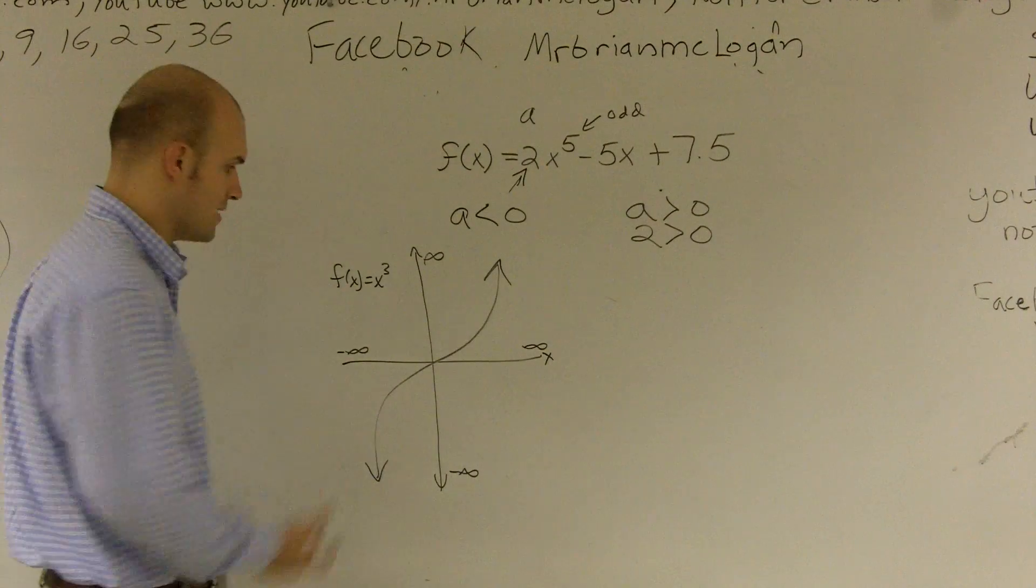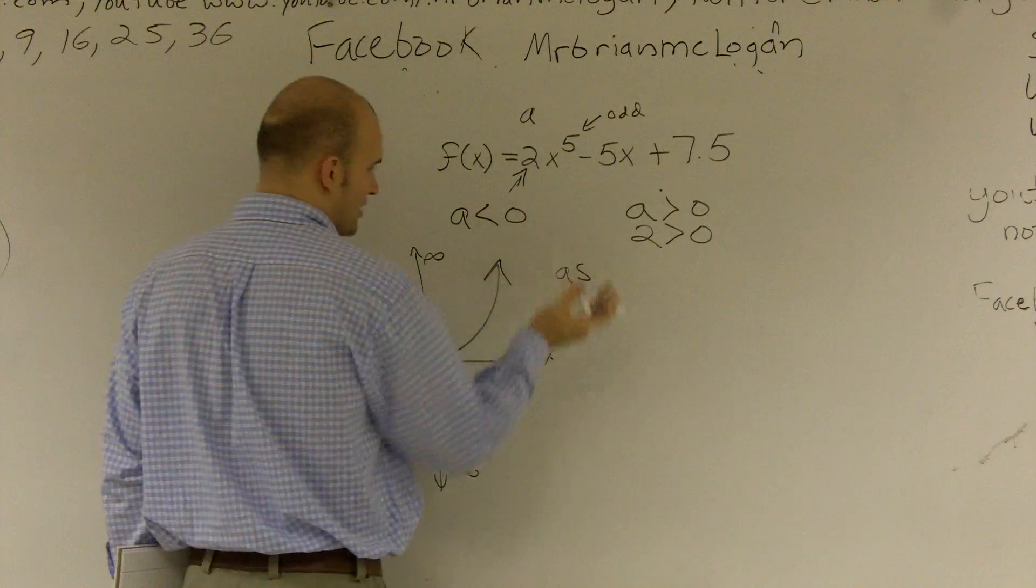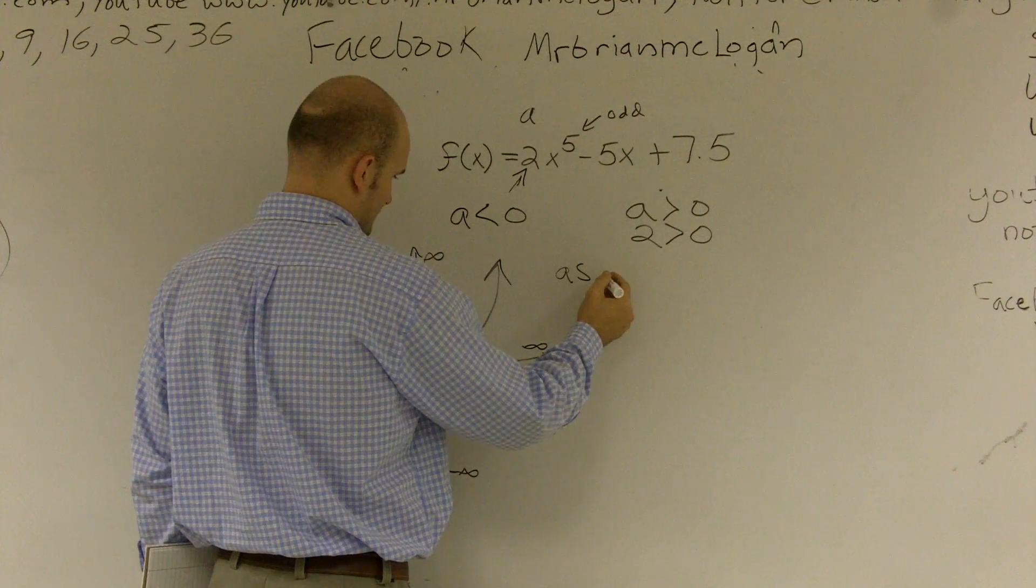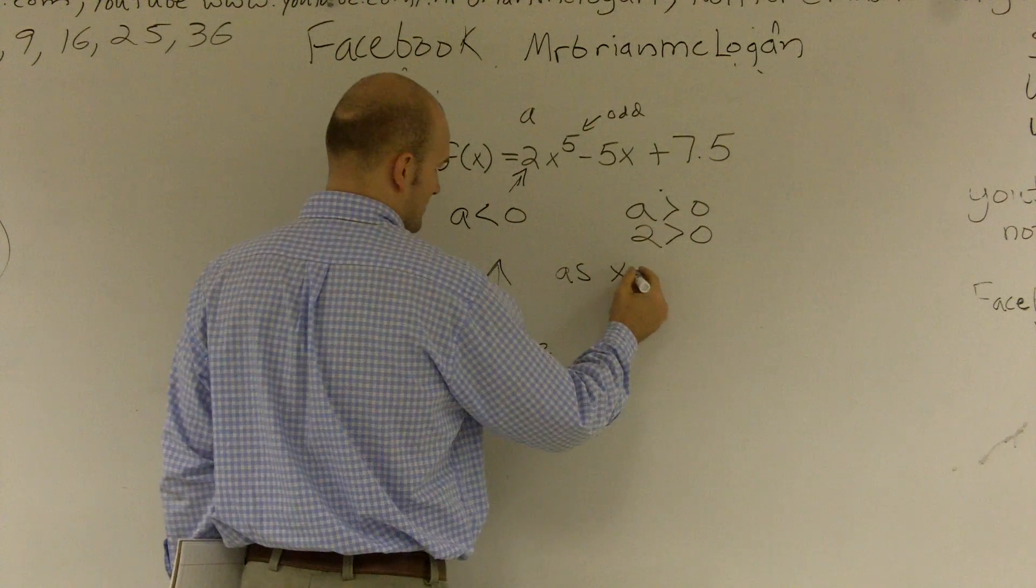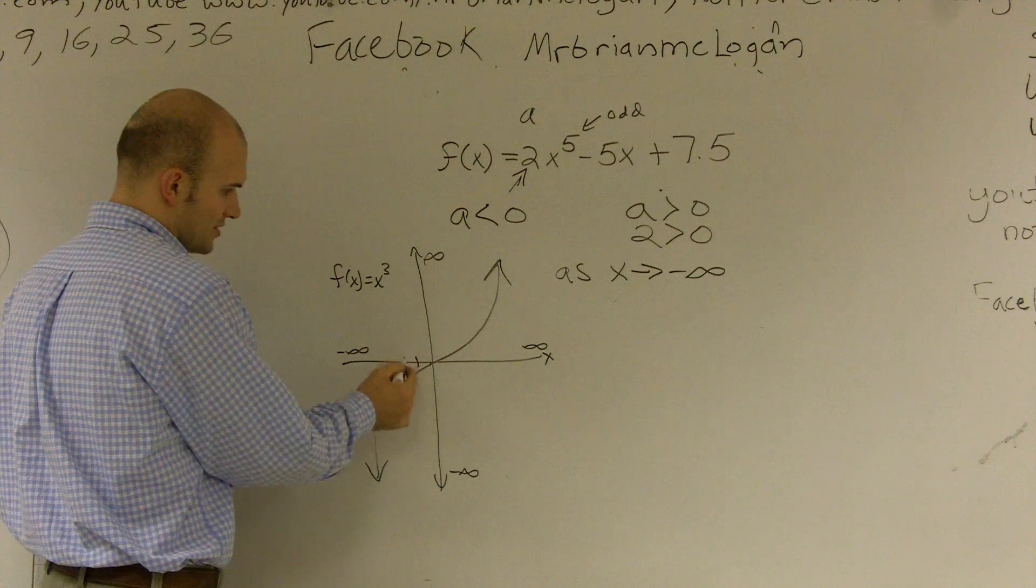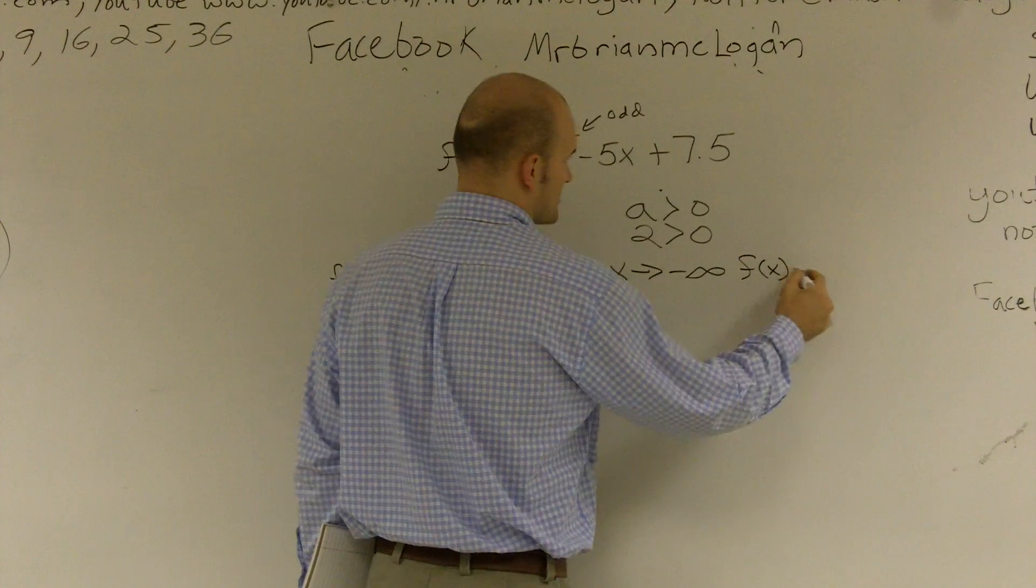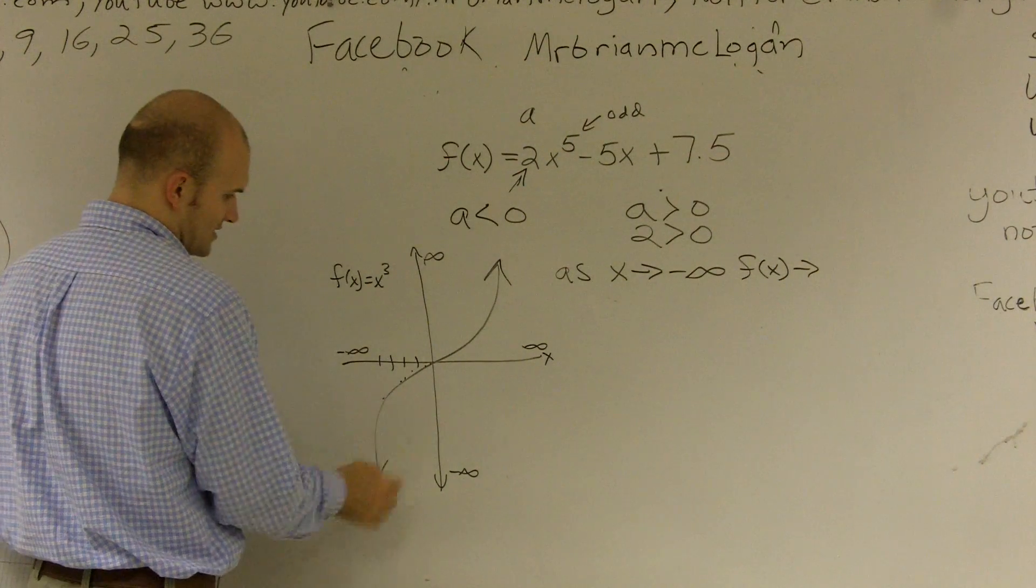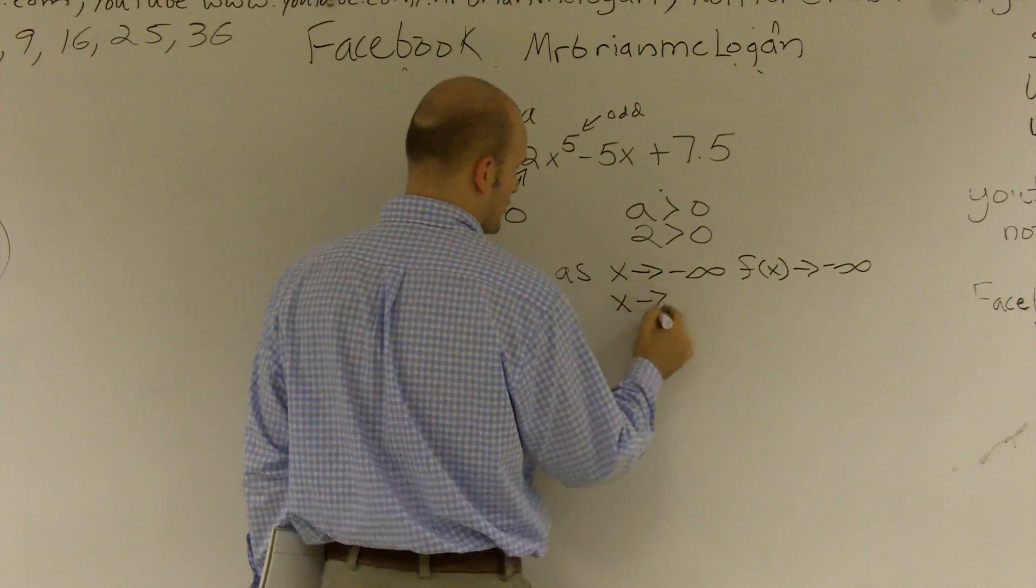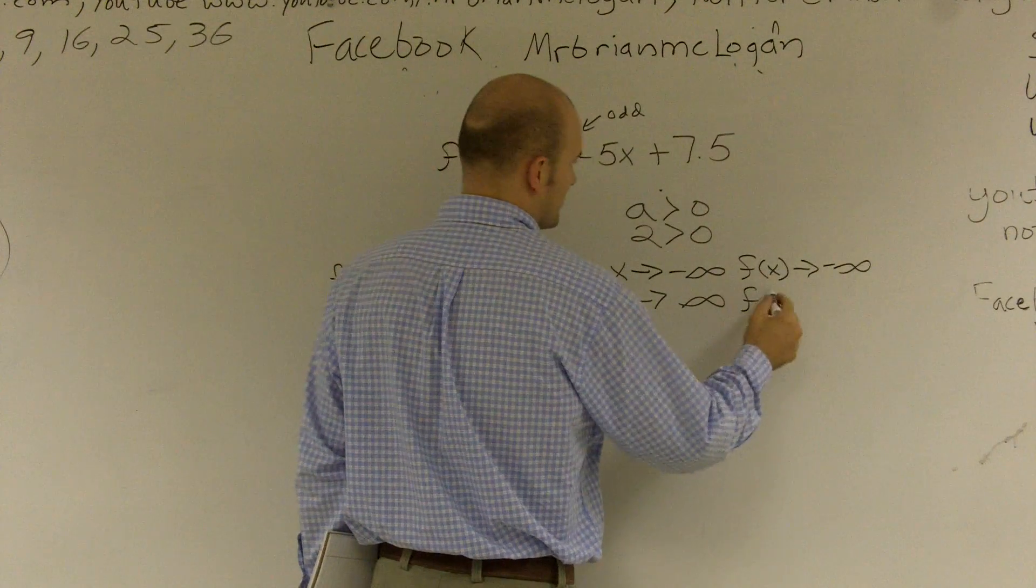So let's look at how are we going to describe what the end behavior is. Well, there's a couple ways you can write this. You could say that it falls as x approaches negative infinity, so as my x values, here's my x values, right? As I'm going towards negative infinity, my function f(x), my function f(x) is going towards negative infinity as well. And then as x approaches positive infinity, so I'm going to the right, my f(x) goes to positive infinity.